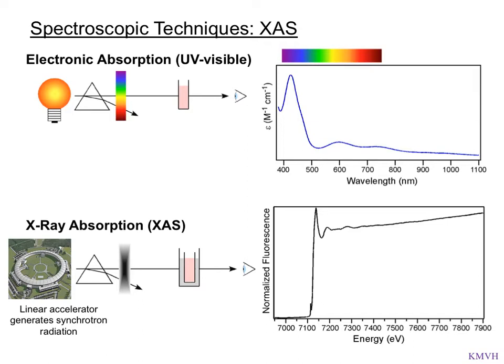Now let's look at x-ray absorption. We use high-energy x-rays, often from a linear accelerator or a synchrotron generating synchrotron radiation, which can then be selected for single wavelengths or a variety of energies going through the sample into the eye — do not look at the x-rays. We then get a spectrum of energy versus fluorescence, and we see a structure. Our job now is to explain what's going on in this spectrum.